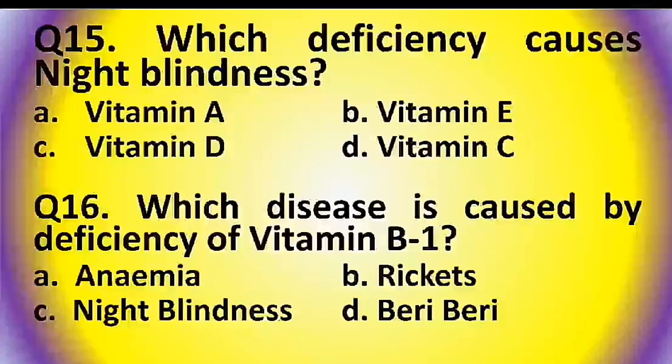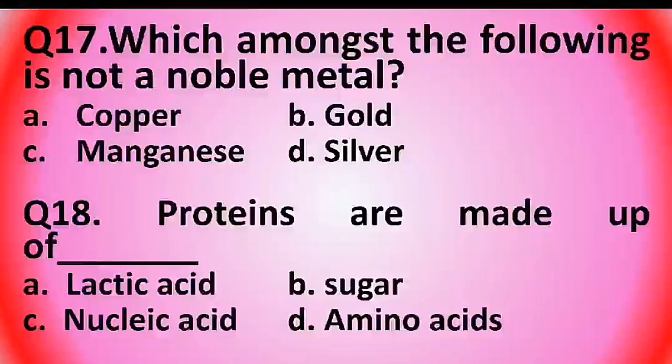Question 16: Which disease is caused by deficiency of Vitamin B1? Options are: anemia, rickets, night blindness, or beriberi. The answer is option D: beriberi.